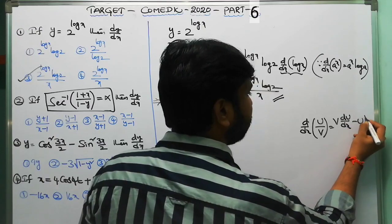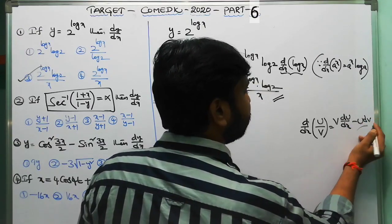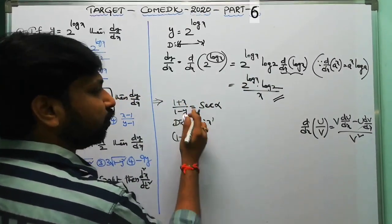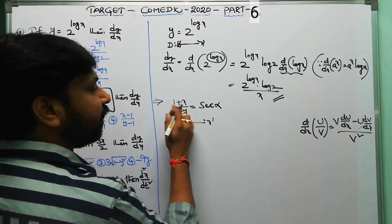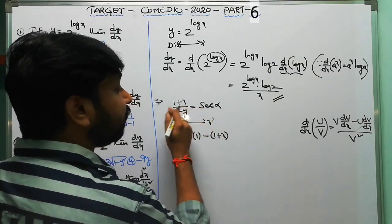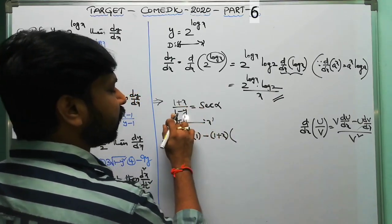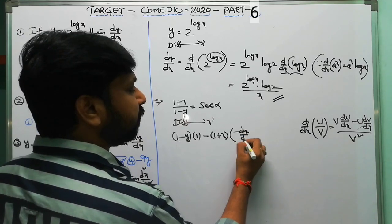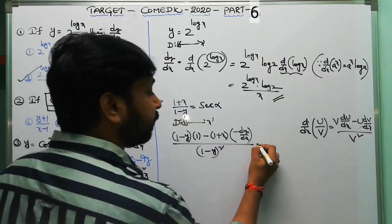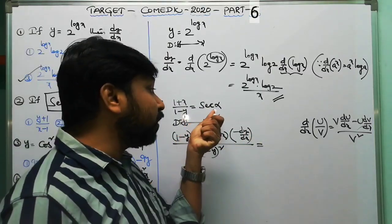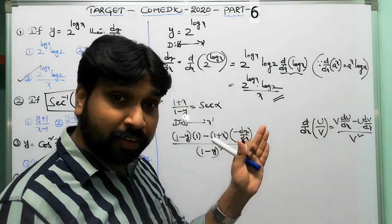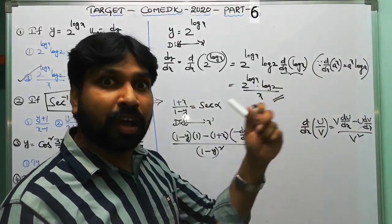Applying the quotient rule: denominator (1-y) times derivative of (1+x) — which is 1 — minus numerator (1+x) times derivative of (1-y) — which is −dy/dx — all over (1-y)². On the right side, the derivative of sec α: since α is a constant, sec α is also a constant, so its derivative is 0.